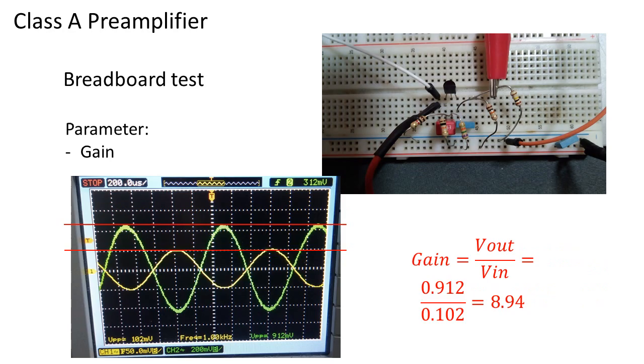I now build up the circuit on a breadboard with a 2N3904 NPN transistor. At the input is a signal of 100 millivolts peak to peak. And at the output I measure 912 millivolts peak to peak. Dividing the output with the input gives us a gain of about 8.9 times.